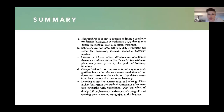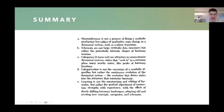In summary: macro inference is not a process of firing a symbolic production rule, but a qualitative state change in a dynamical system. Schemata are not large symbolic data structures but potentially intricate shapes of harmony maxima. Categories are attractors in connectionist dynamical systems — states that pull in nearby states like peaks of harmony functions. Categorization is not the execution of a symbolic algorithm but the continuous evolution of the dynamical system driving states into attractors that maximize harmony. Learning is not the construction and editing of formulae, but the gradual adjustment of connection strengths, slowly shifting harmony landscapes and adapting old and creating new concepts, categories, and schemata.